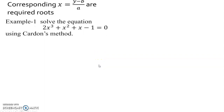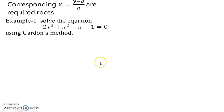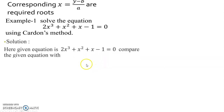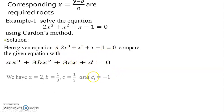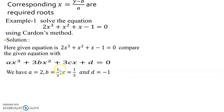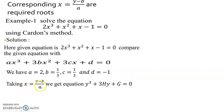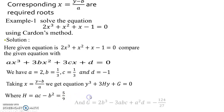Now let's solve an example: 2x³ + x² + x - 1 = 0 using Cardan's method. Comparing with ax³ + 3bx² + 3cx + d = 0, we get a = 2, b = 1/3, c = 1/3, d = -1. Setting x = (y - b)/a, we use y³ + 3hy + g = 0.